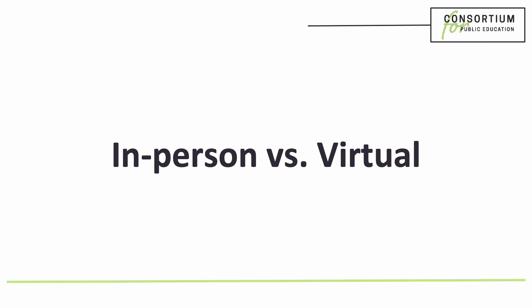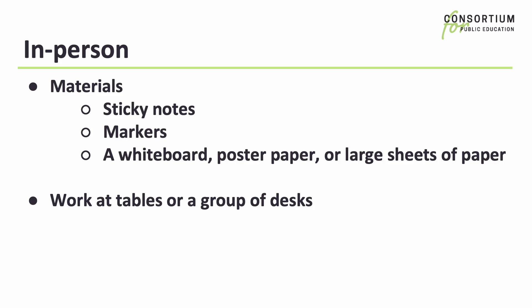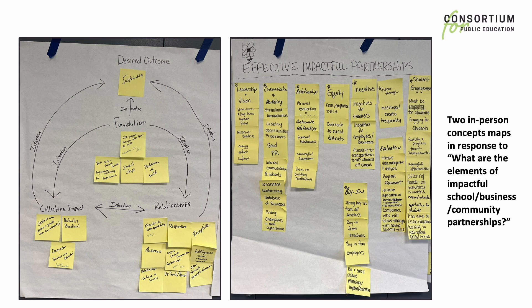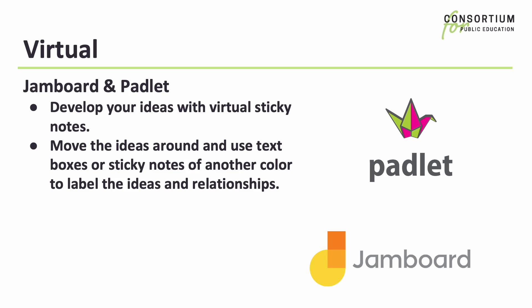You may be wondering if concept mapping is best done in person or virtually, and really, it can be done either way. If you are in person, you'll want to make sure that you have sticky notes, markers, and either a whiteboard, poster paper, or large sheets of paper to organize your stickies on. It's also best if you work at tables or in groups of desks pushed together. Here is an example of an in-person concept map — an administrative team from a school was discussing school culture. Here we have two in-person concept maps created in response to the prompt: what are the elements of impactful school business community partnerships? If you're creating your concept map virtually, you might consider Jamboard or Padlet. You still identify your ideas with virtual sticky notes, and then you move the ideas around and use text boxes or other colored sticky notes to label the ideas and relationships.